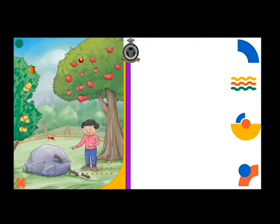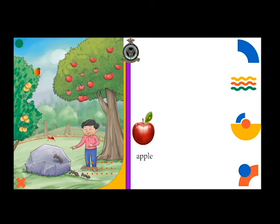Dear kids, it is time to have fun with the QR code. Look at the picture and try to guess what's going on. Now look at the different objects — this is an apple, this is an apricot.